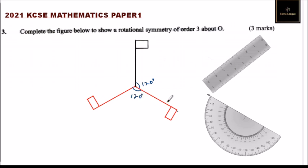Then you draw the same diagram identical to this one. Finally, you end up with an angle of 120 degrees. So this diagram shows a rotational symmetry of order three about O.